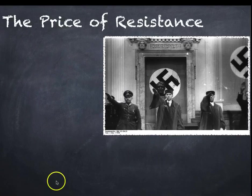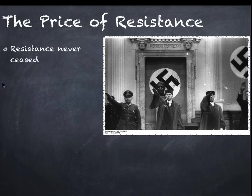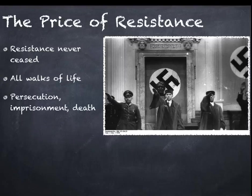What was the price of resistance? Certain sections of German society did resist, even if it was through grumbling, jokes, or small actions — it was nonetheless resistance, and it never ceased. It could be a joke, a criticism, or simply not giving the Heil Hitler salute. As time wore on, there were stiffer penalties for any level of resistance — from persecution and imprisonment to even the death penalty.